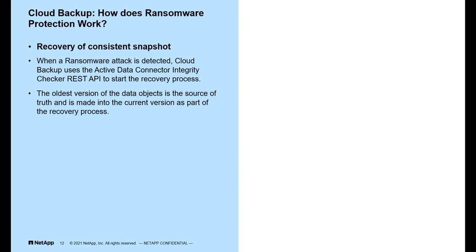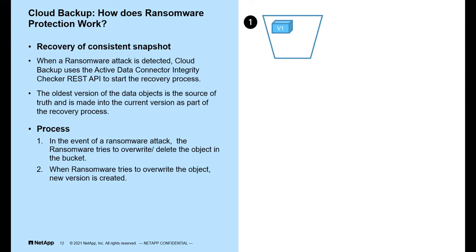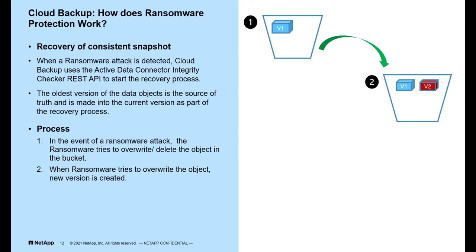Now let's understand the recovery process. When a ransomware attack is detected, cloud backup uses the Active Data Connector integrity checker REST API to start the recovery process. In the event of a ransomware attack, the ransomware tries to overwrite or delete the object in the bucket. When the ransomware tries to overwrite the object, a new version is created.